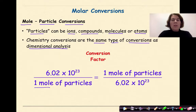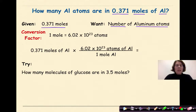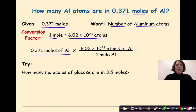How many aluminum atoms are in 0.371 moles of aluminum? Our given is 0.371 moles of aluminum, and what we want is the number of aluminum atoms. Our conversion factor is 1 mole equals 6.02 times 10 to the 23rd atoms. We write our given, put a multiplication sign and a line — we're starting with moles, so 1 mole goes on the bottom.